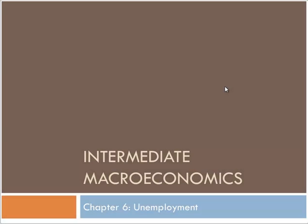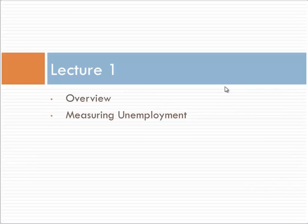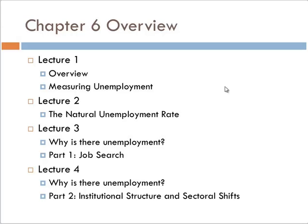Hello, everyone. We are going to begin Chapter 6, which is dealing with unemployment. In this first lecture, we're going to give an overview of the chapter, and then we're going to take a little bit of time and talk about the actual measurement of unemployment. I told you back in Chapter 2 that we were going to skip that and save the measuring of unemployment until Chapter 6. Well, it's Chapter 6, so now it's time to talk about that. We're breaking this up into four lectures — Lecture 1 covers how unemployment is measured, some of the problems and challenges in measuring unemployment, and where the data comes from.